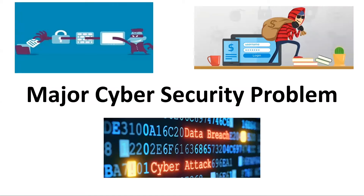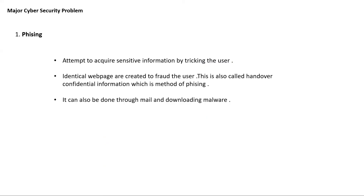We are going to discuss some of the major cyber security problems. The first is phishing. Phishing refers to the method of tricking users into sharing confidential data with cyber criminals. There are basically two types: handing over confidential information, where hackers create an identical web page designed to deceive users into sharing sensitive data or downloading malware; and downloading malware, which can also be done through email.